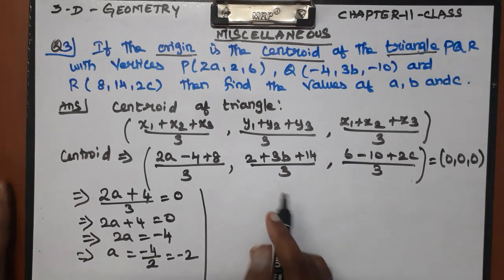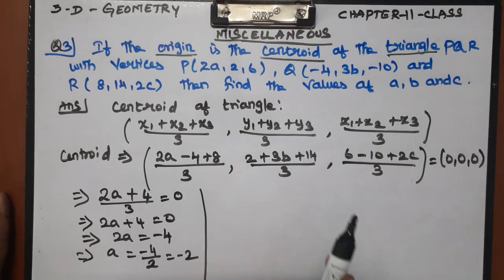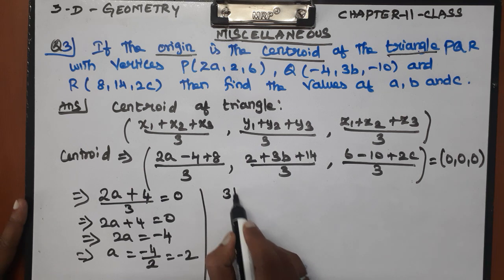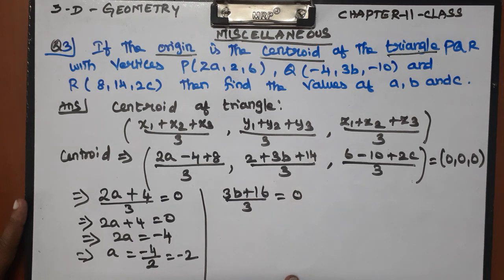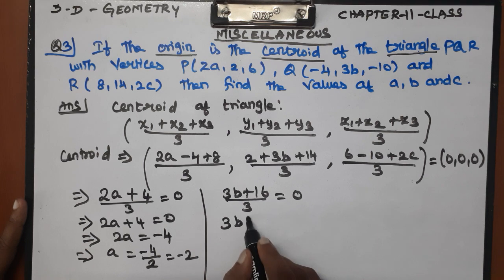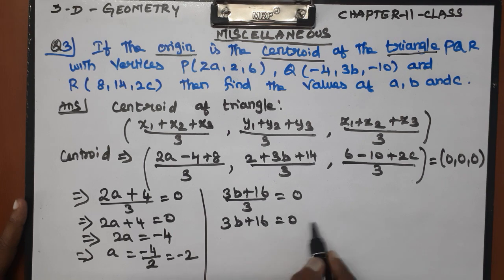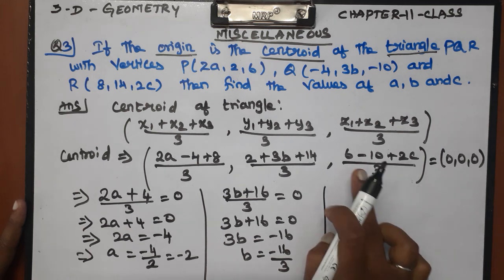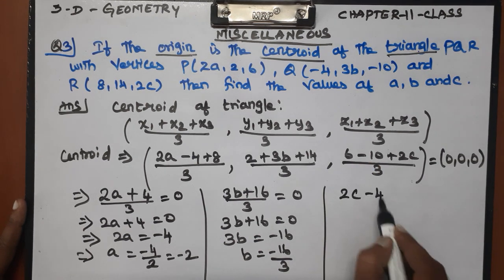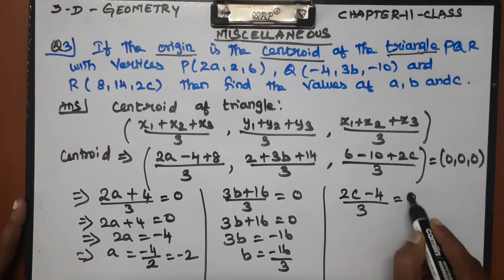That's the first part. Now the second equation is equal to the second coordinate. For the third part: 6 minus 10 minus 4. Now 2c minus 4, divided by 3, equal to 0.